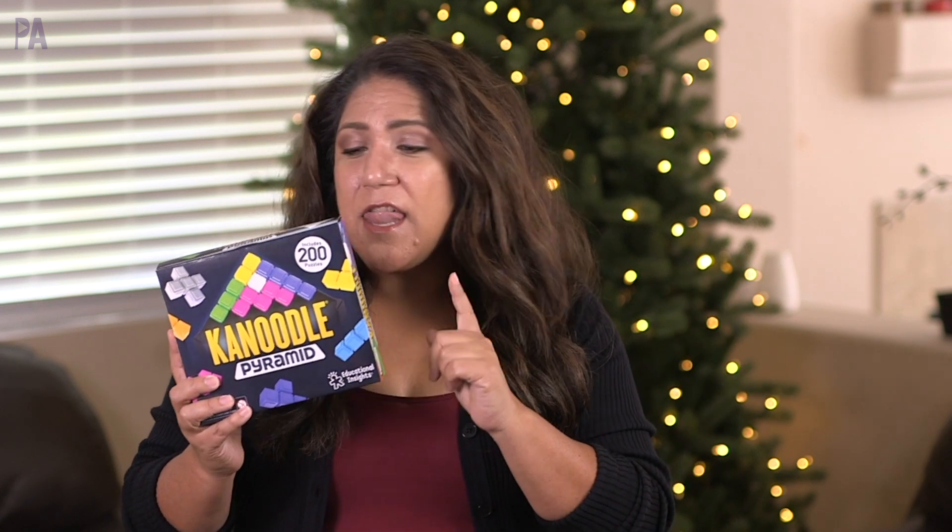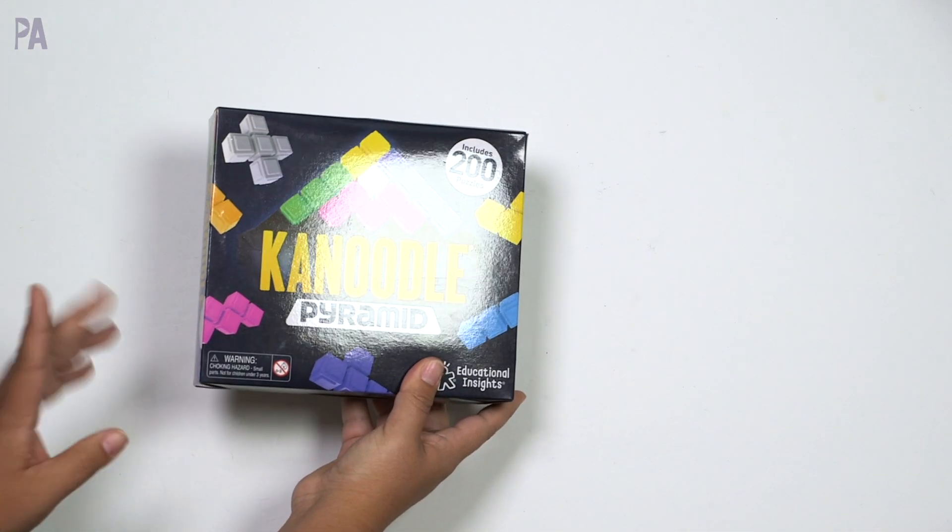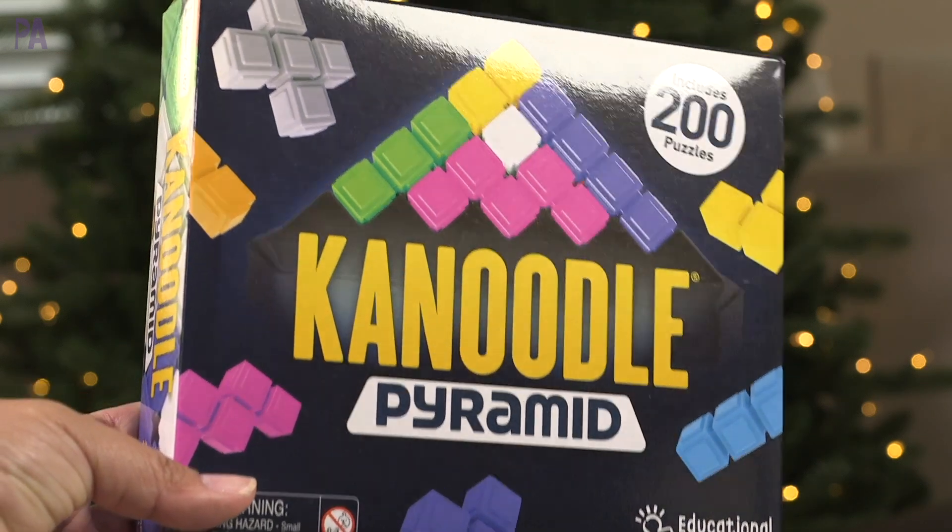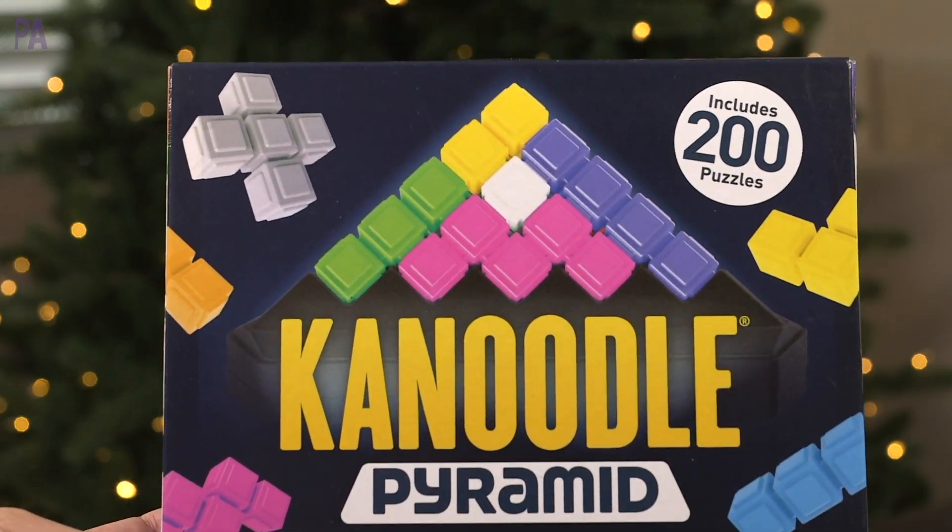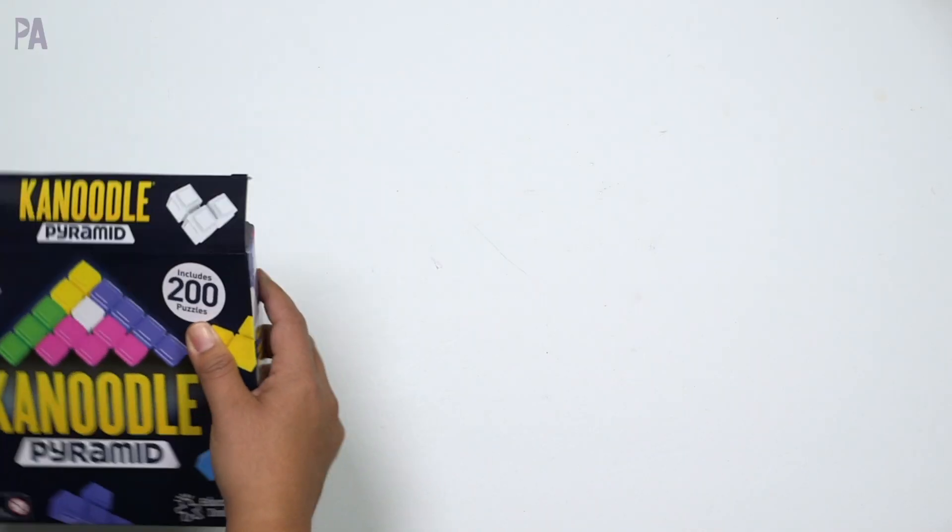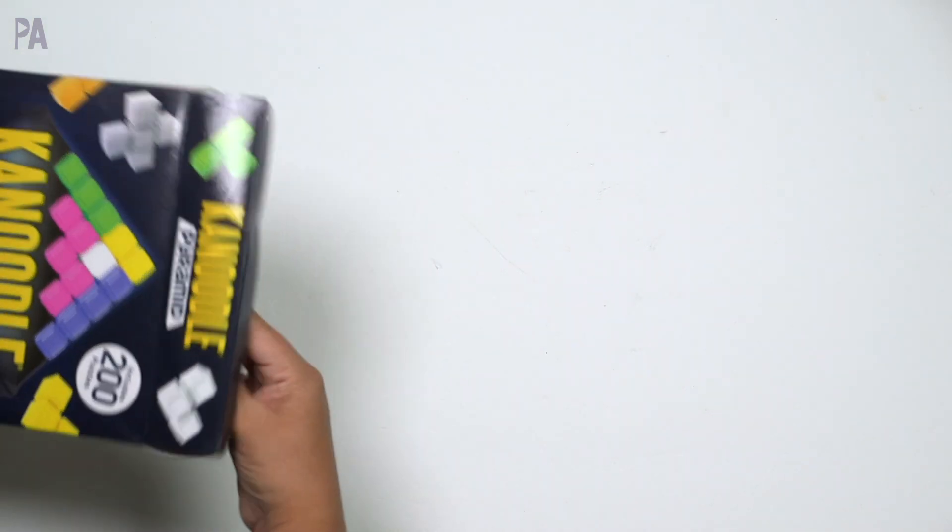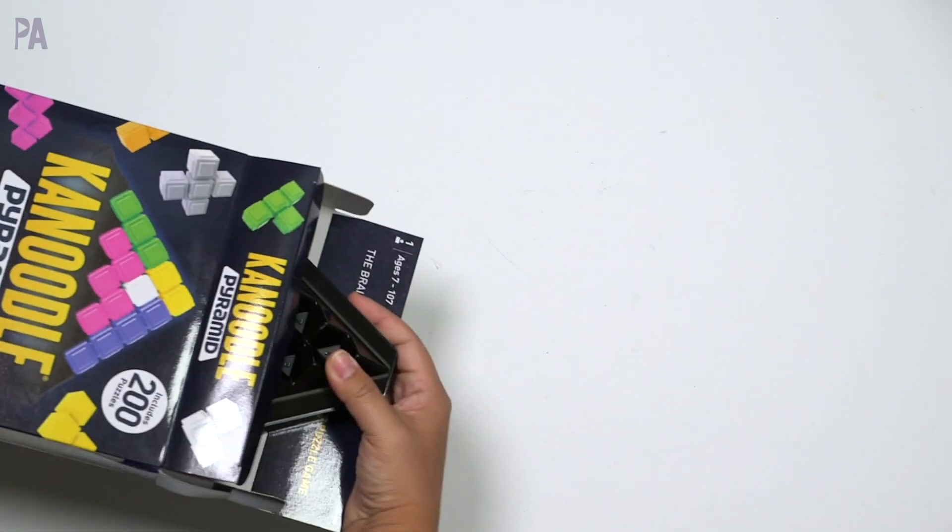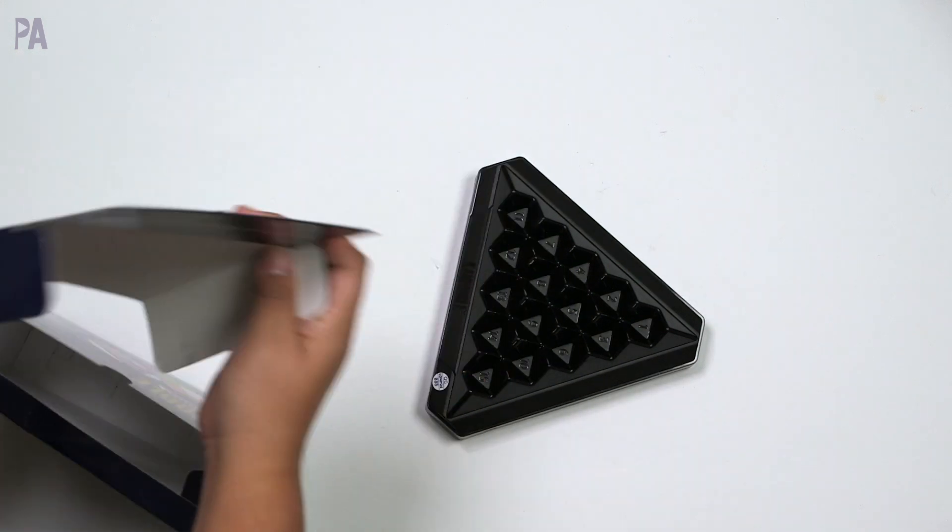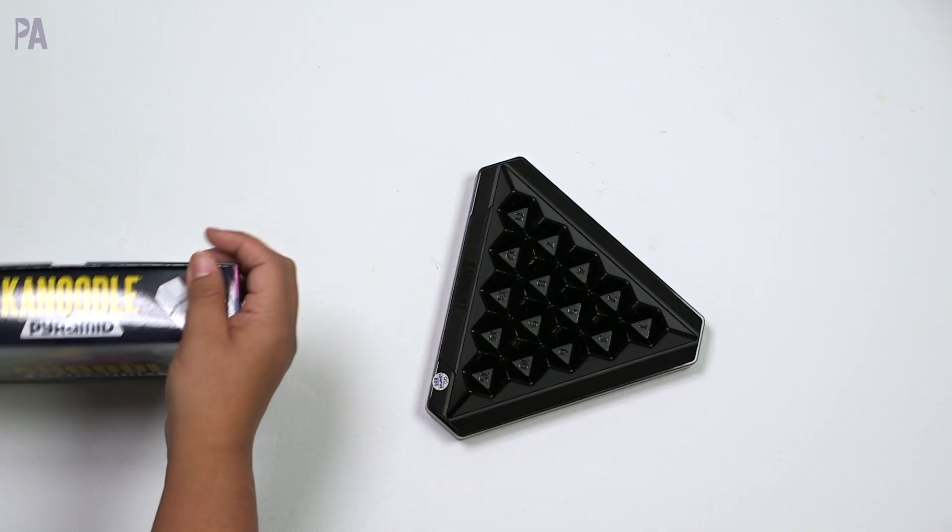This one I definitely had my eye on because it's a critical thinking and a puzzle game. Building in 2D and 3D it takes it really to the next level. If you've ever tried Kanoodle, this one is one to try. You're gonna love it. It's called Kanoodle Pyramid. I have featured Kanoodle on my channel before and it's been a big hit. You guys have said that you really do like it. This one I was really curious about because it's 2D and 3D. Recommended for ages seven and up and it's a 3D puzzle game.